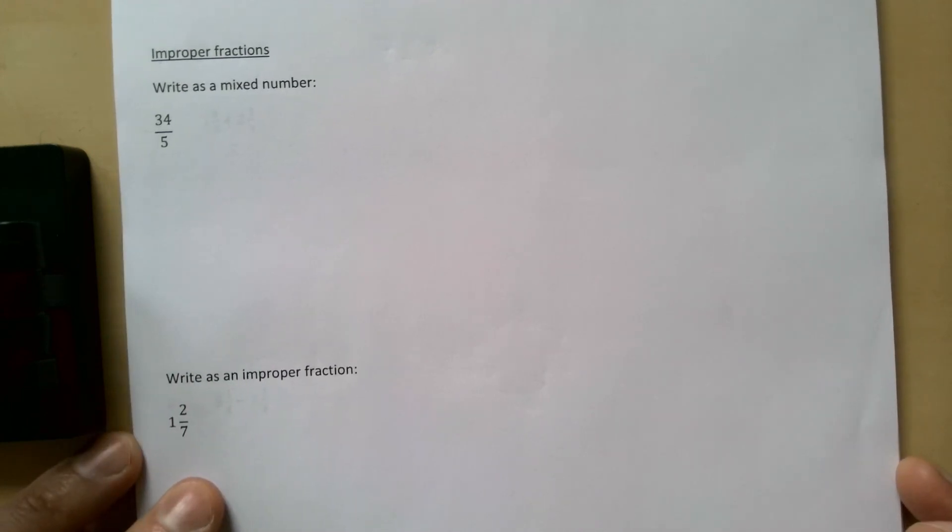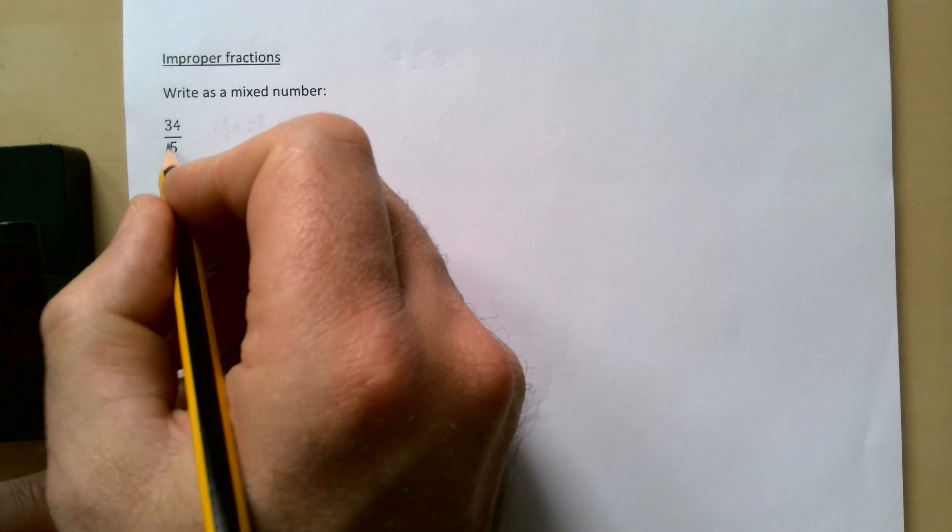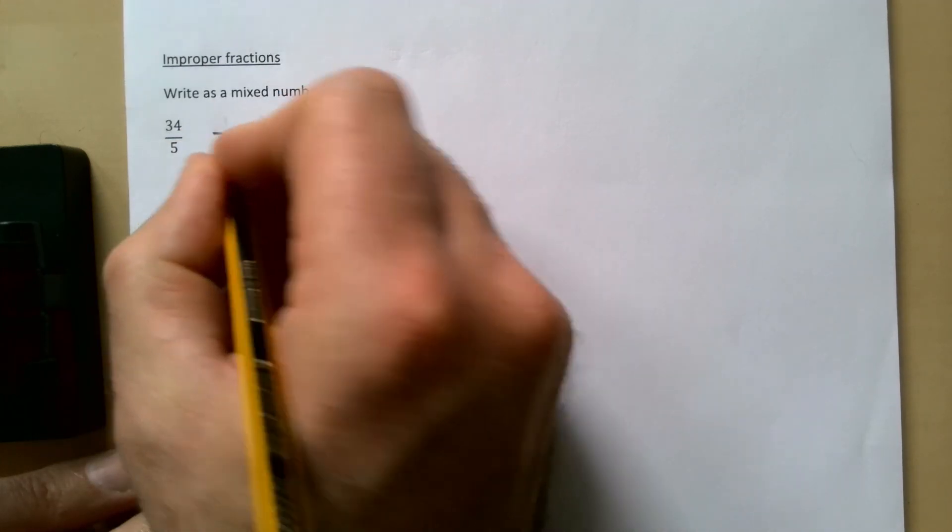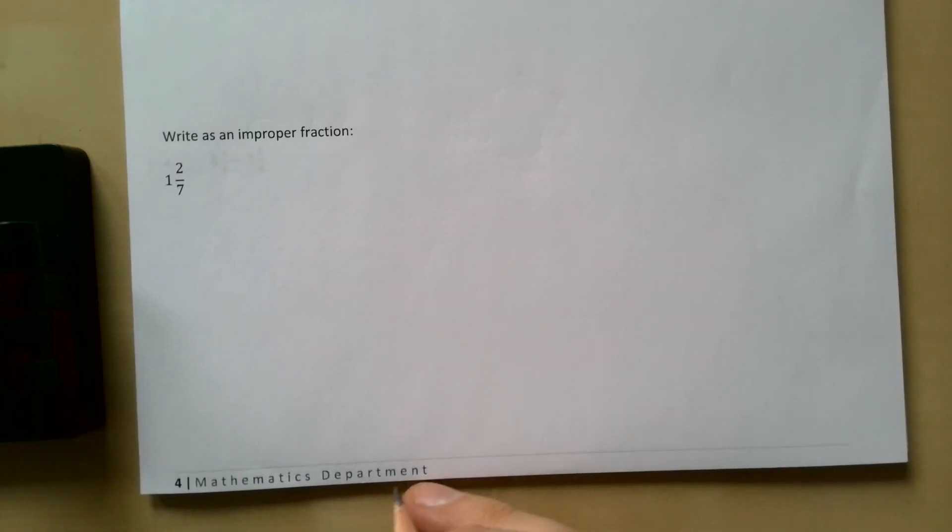Improper fractions - write as a mixed number. Again, something we would have done last year and should be all over. 34/5 goes 6 times and there are 4/5 left over.